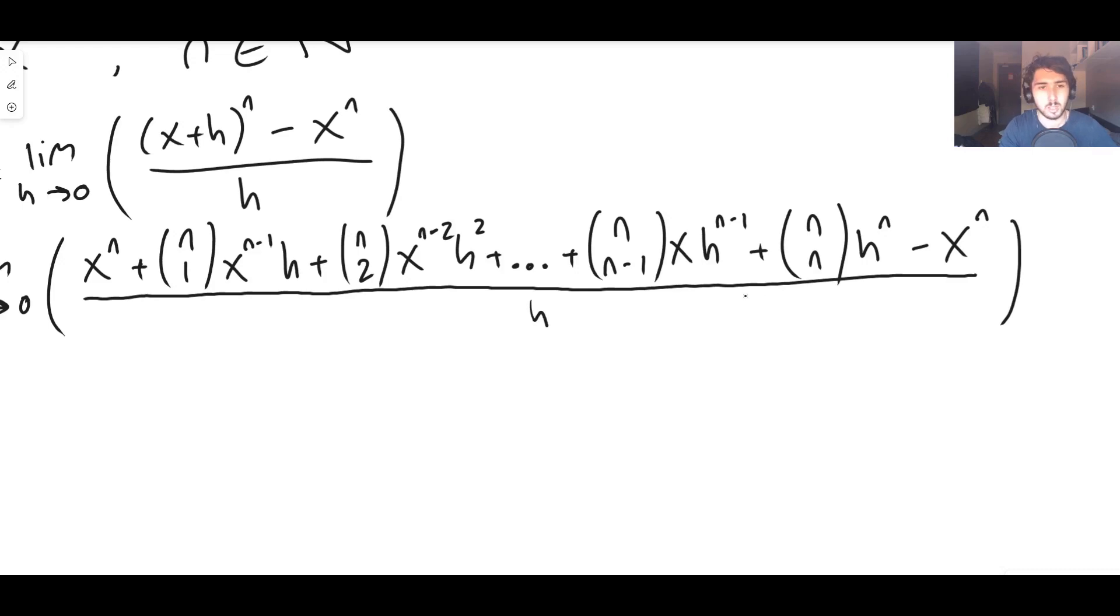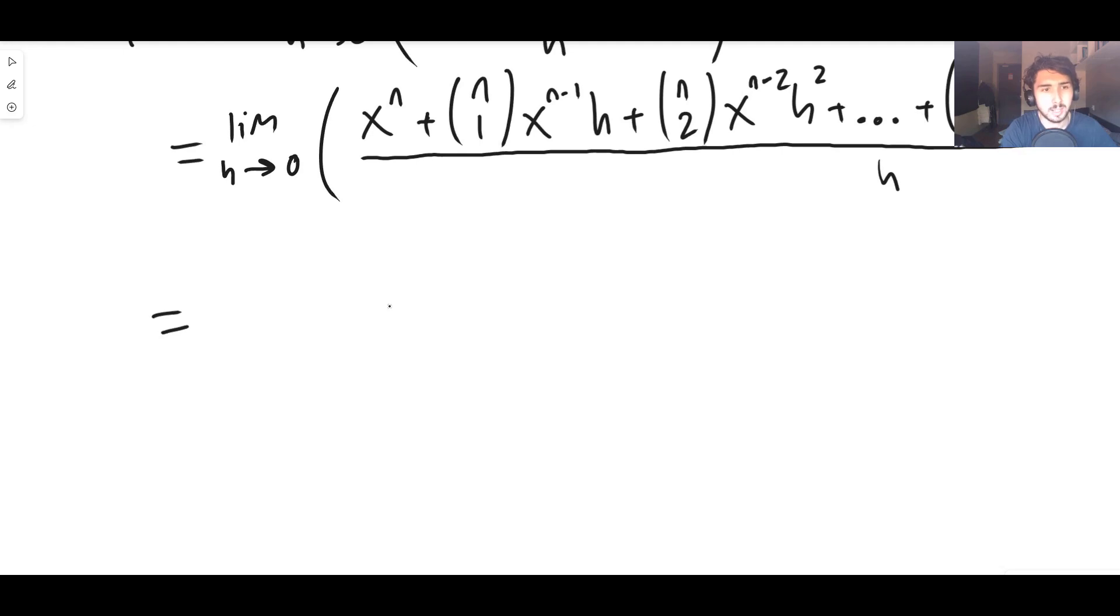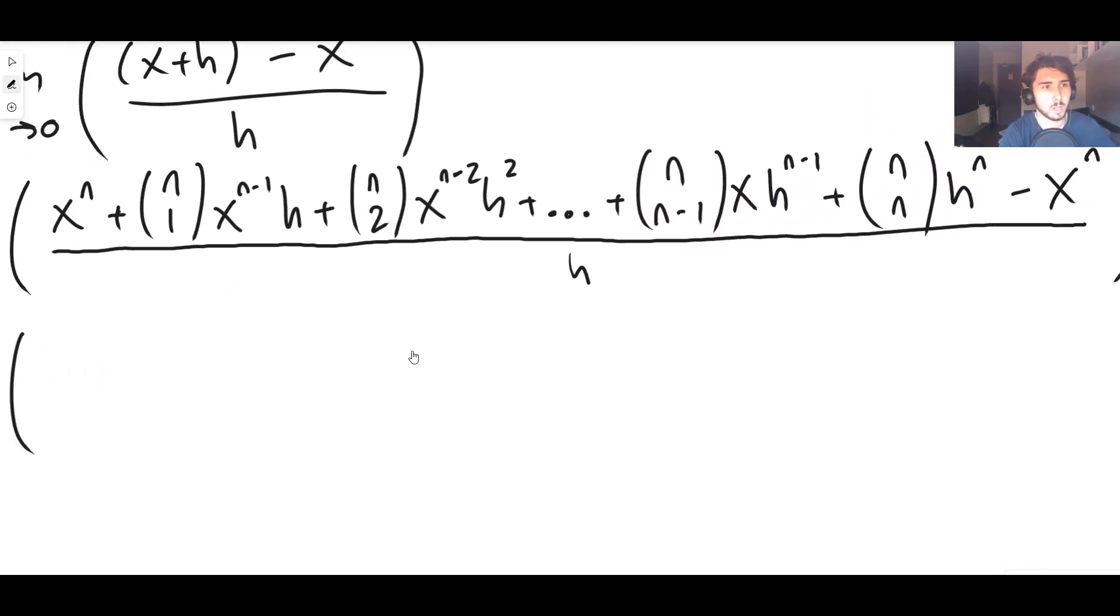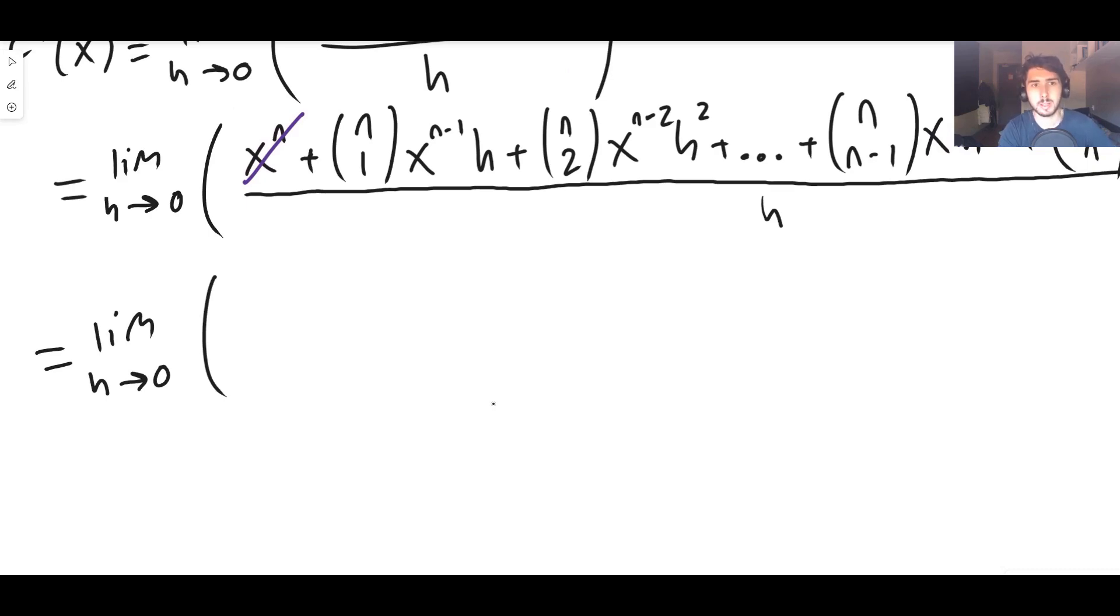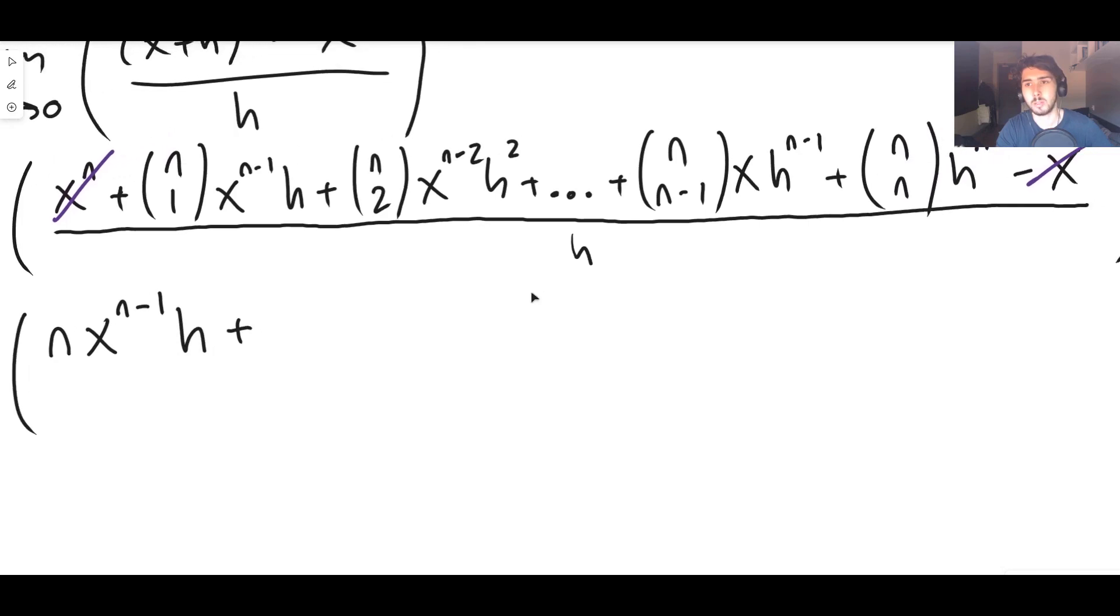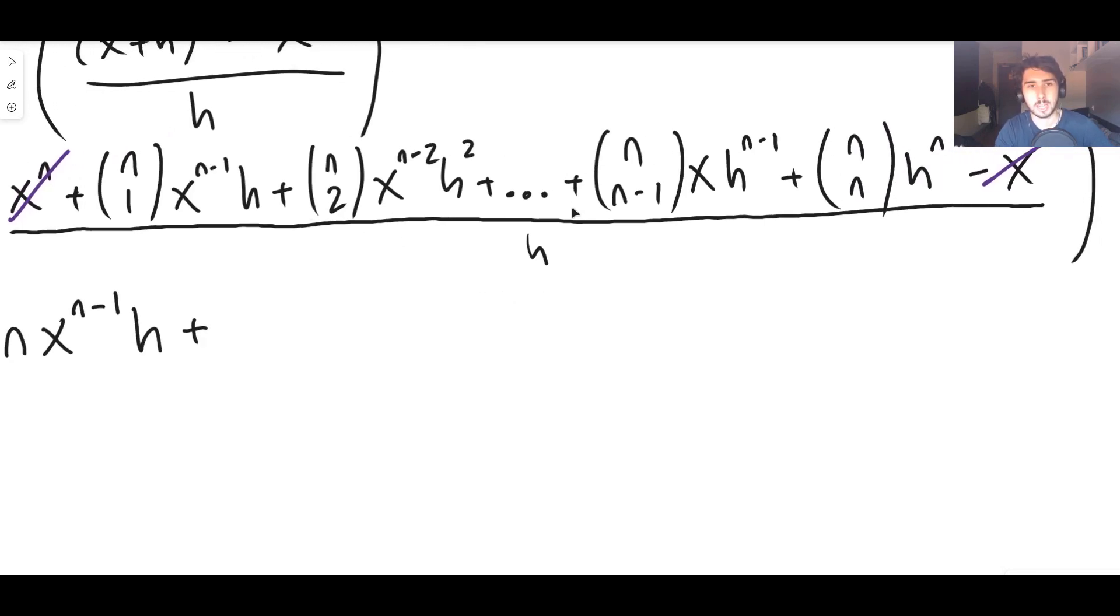This is equal to the limit as h goes to zero. First of all, the x to the n and the x to the n are going to cancel out, so x to the n minus x to the n, they're gone. Now let's try and simplify the top a little bit. Any number choose one is just the number, so n choose one is n.